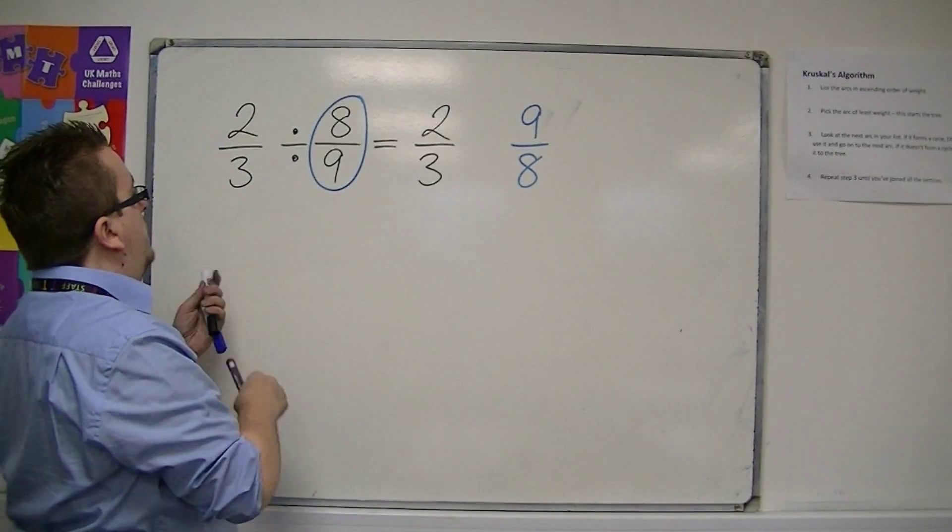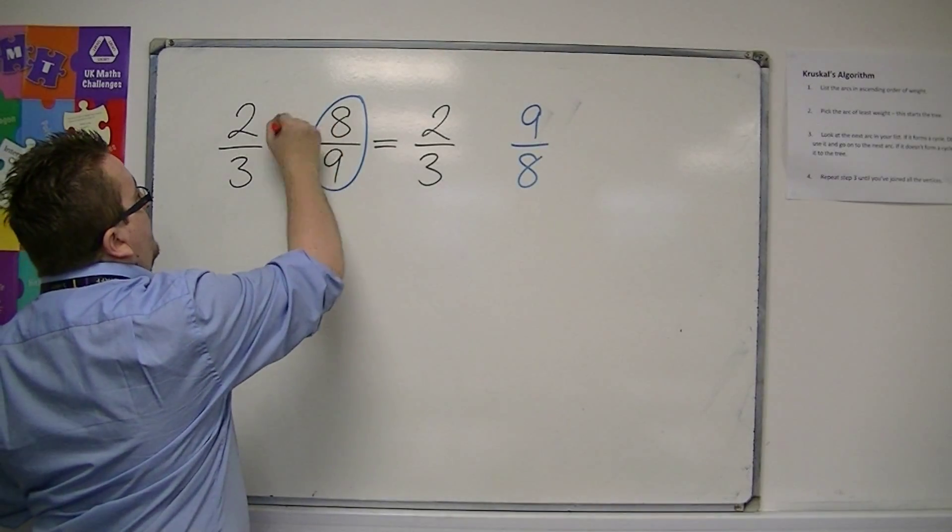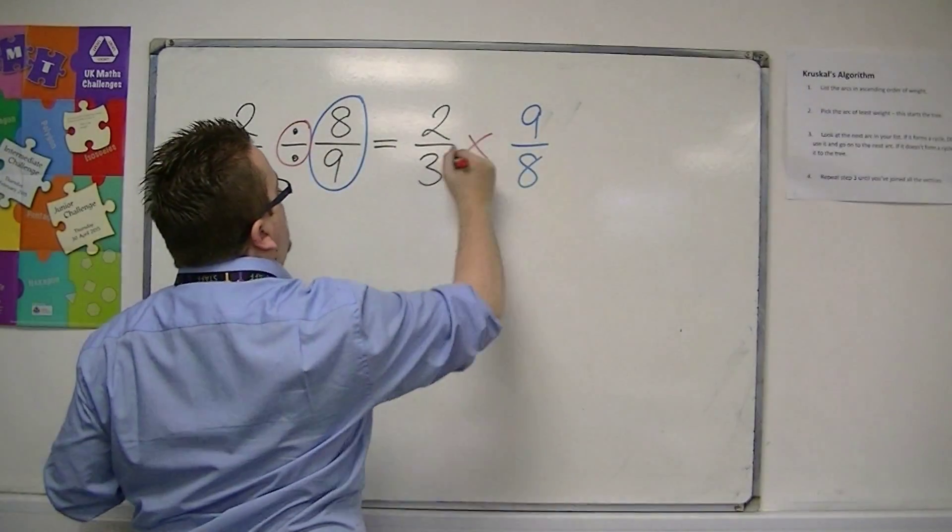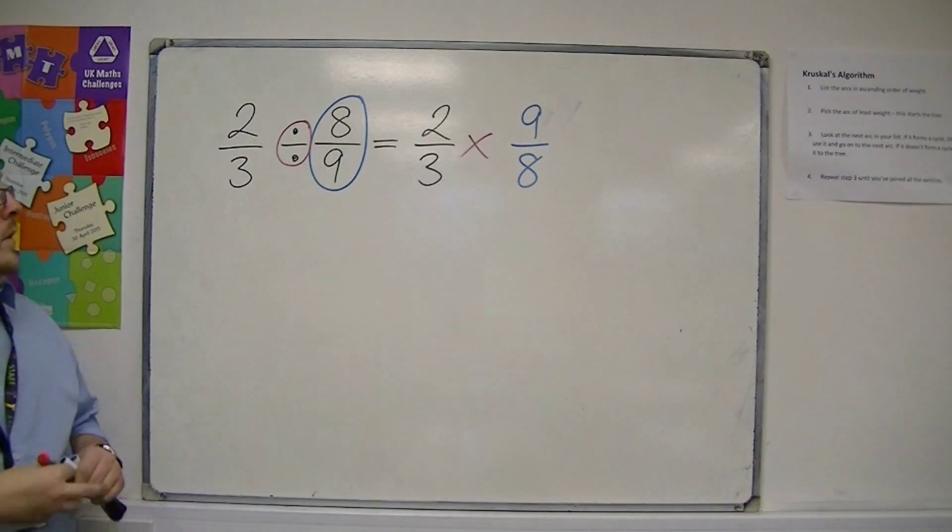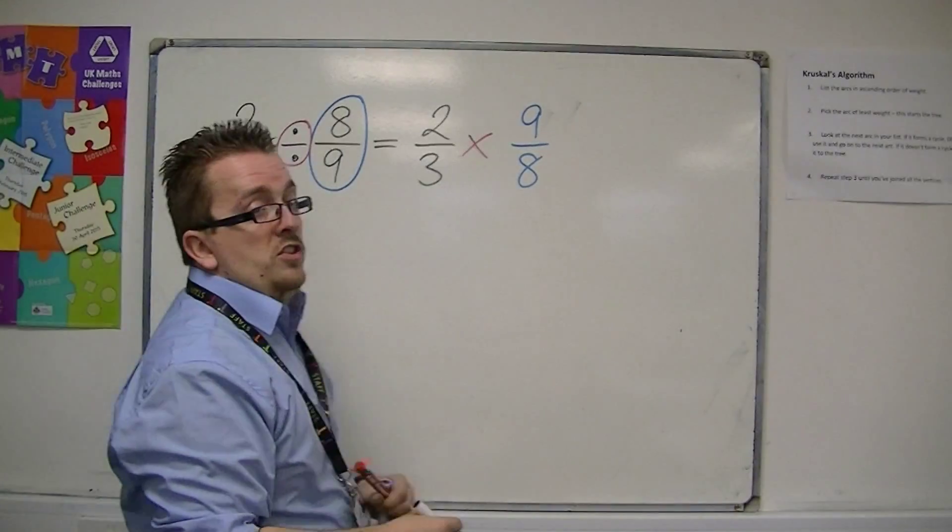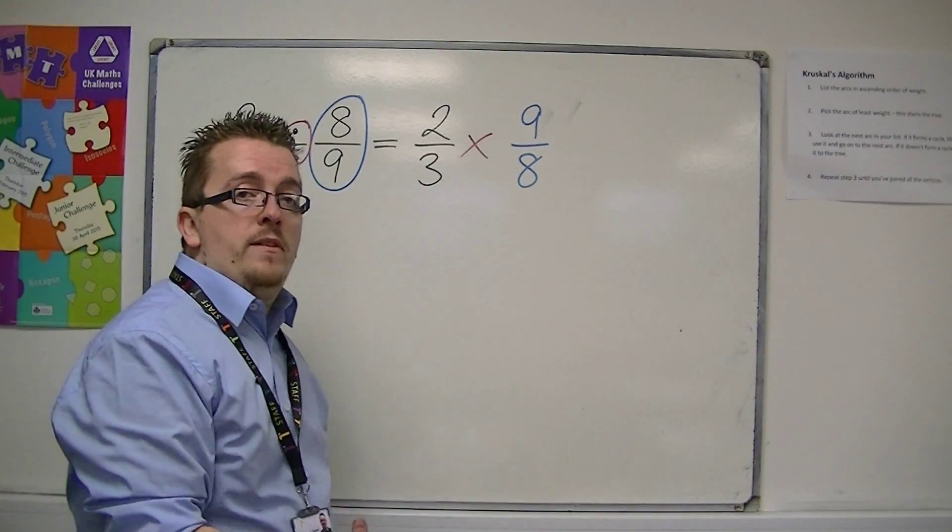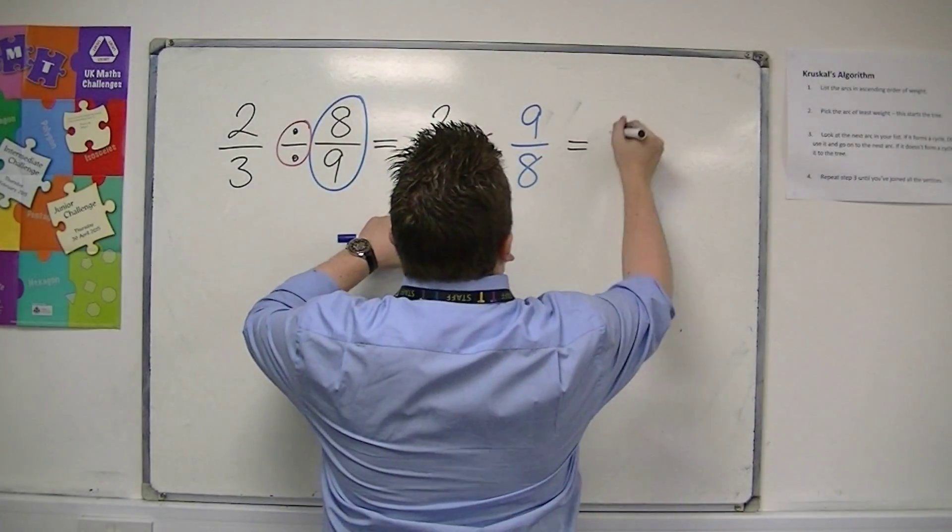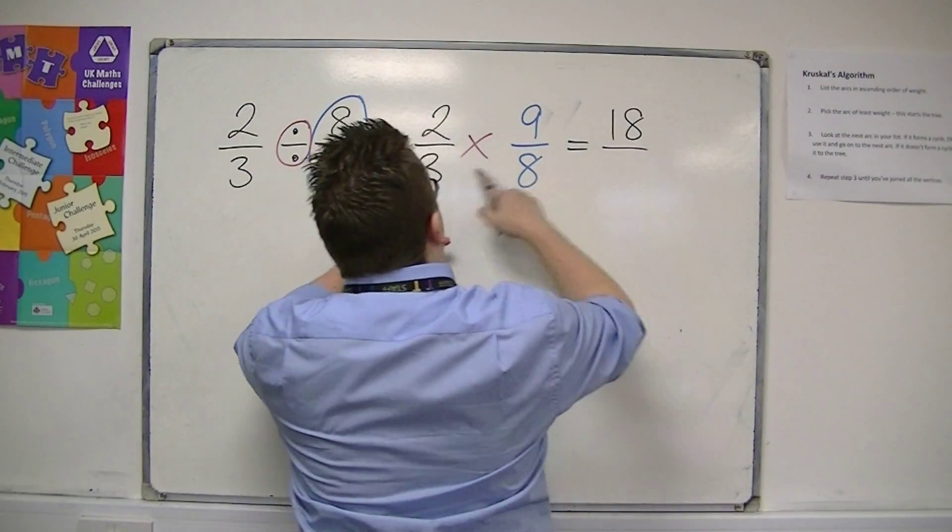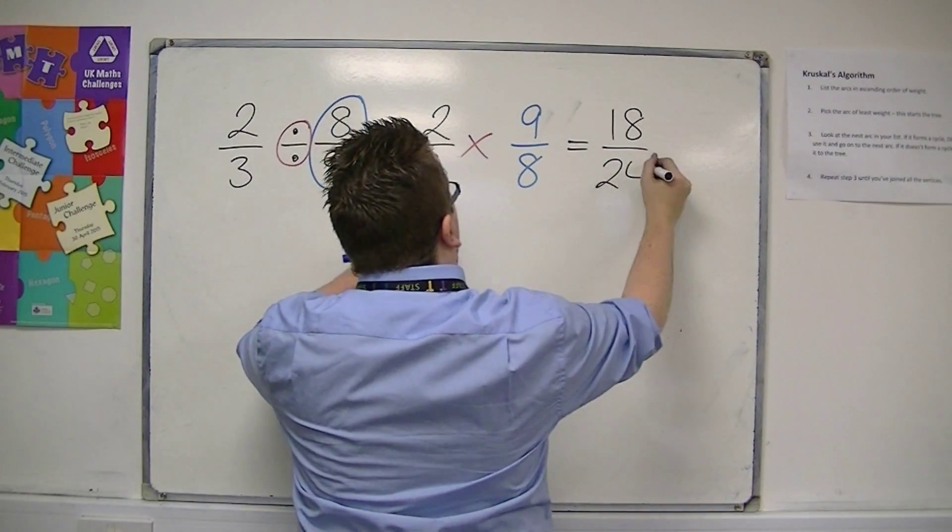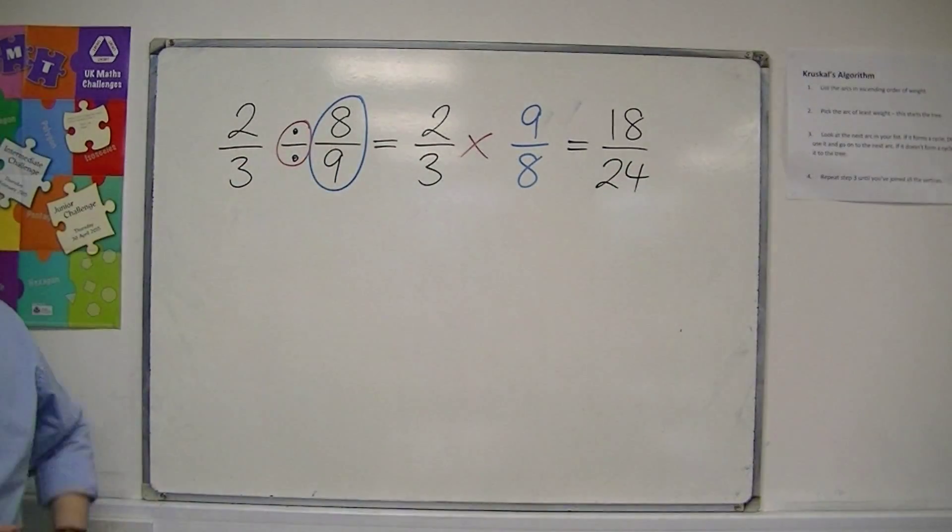And then, we turn the division into a multiplication. And then, you just multiply it as we did in the previous video, where you multiply the top two numbers and multiply the bottom two numbers. So, we get 18 over 24.